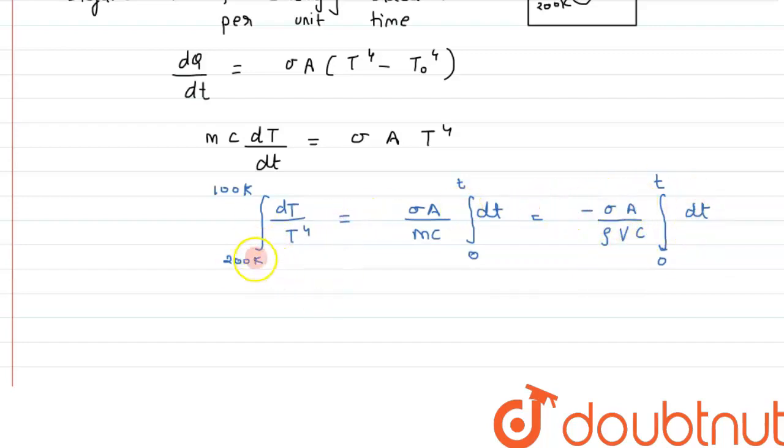If we solve it further and put the limits, after integration we will get the answer as 1/(3T³) with limits from 200 to 100 kelvin.